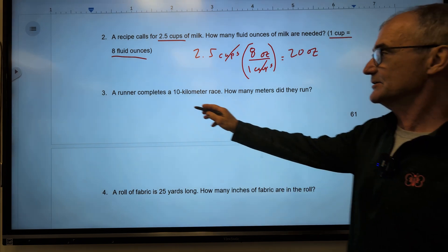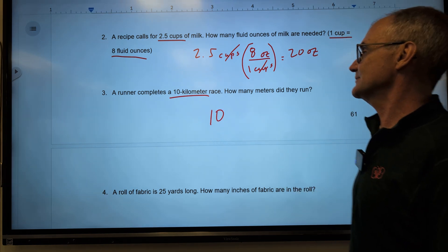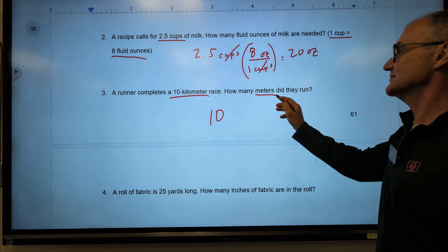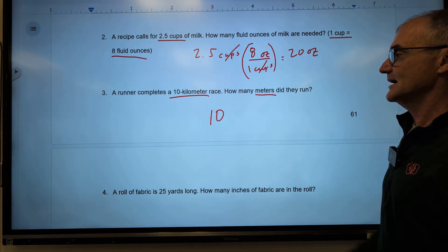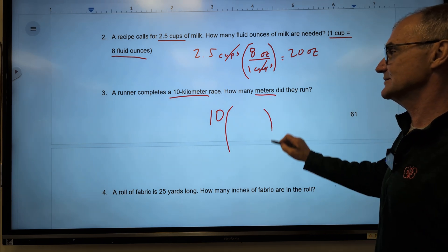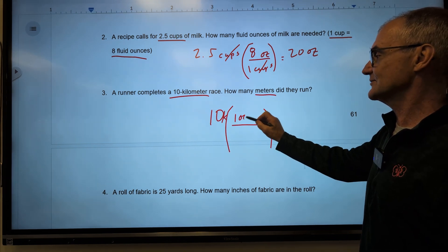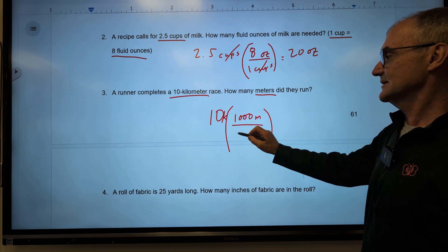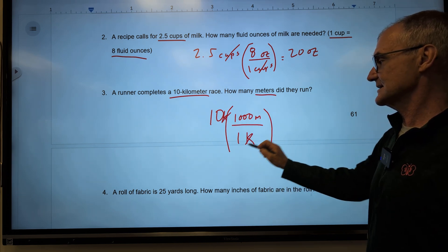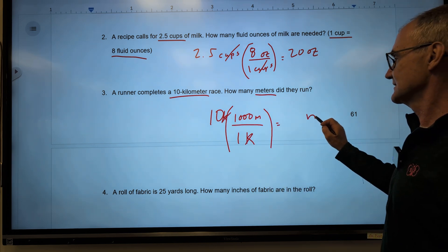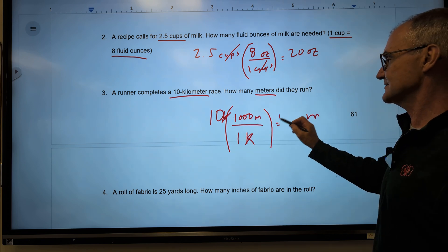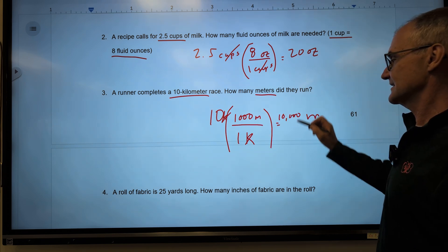A runner completes a 10-kilometer race. How many meters did they run? I could multiply it by the number of meters over kilometers. I know there's 1,000 meters in one kilometer. Kilometers cancel. That's going to give me meters, and then I'm going to have 10 times 1,000 or 10,000.